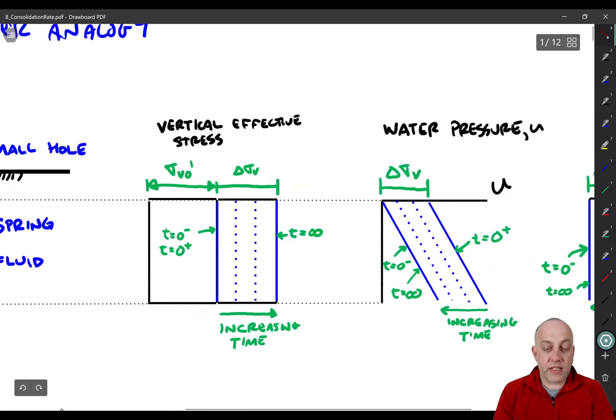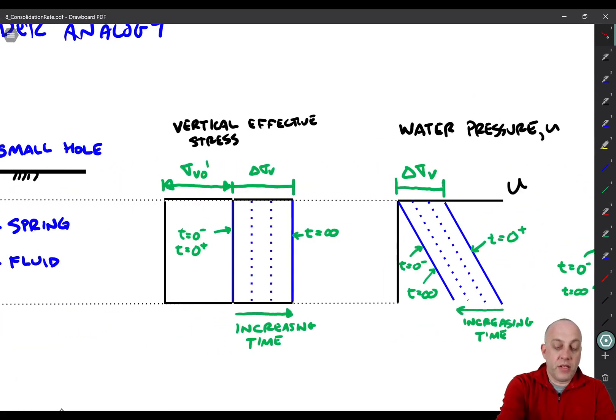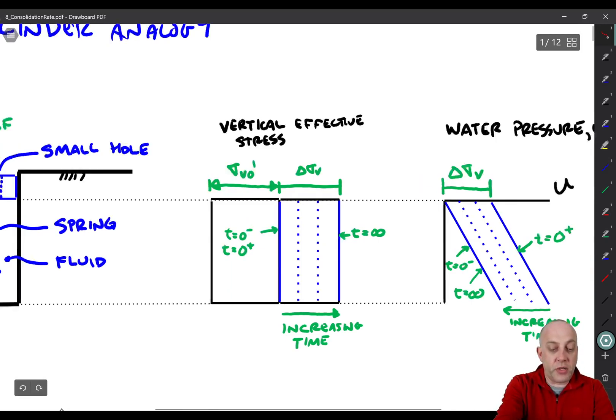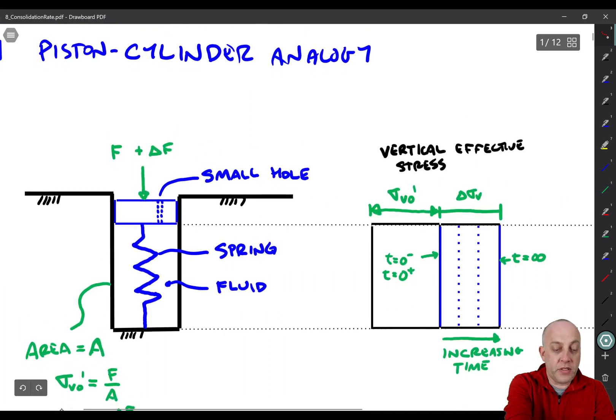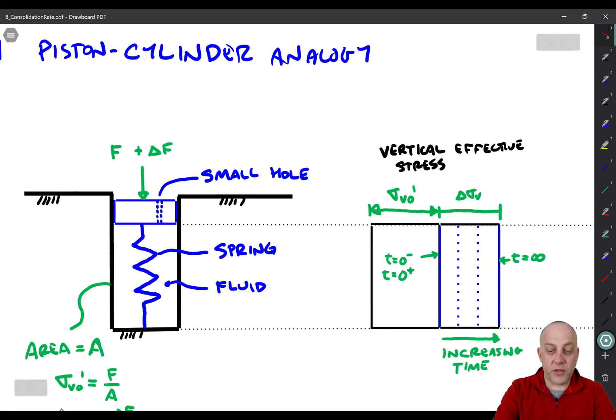So what that means is that at time equals zero, we have an effective stress profile that's there, that's the force in the spring. We're ignoring the self-weight of the spring here, assuming all the force acting on the top is all that exists in the spring. And that's at time equals zero minus right there. Then at time equals zero plus, we've applied the load, but all of the pressure has been taken by the water and the spring hasn't started to deform again, so we haven't changed the force in the spring. Therefore the effective stress stays the same.